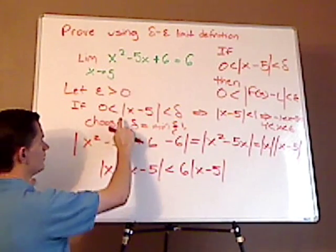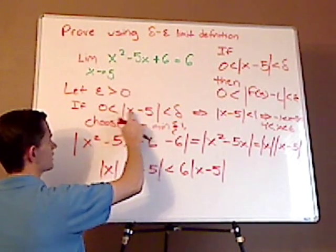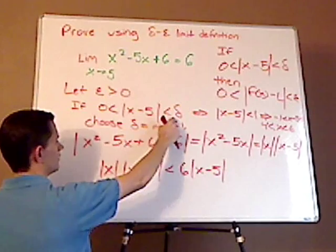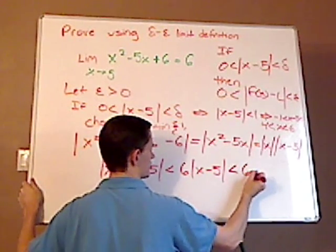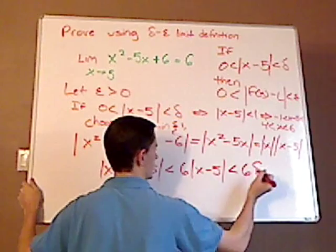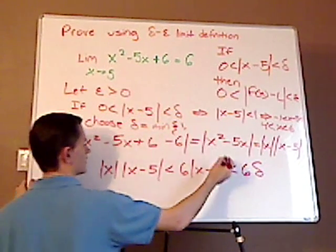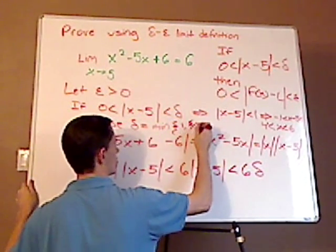So, then, if you multiply both sides by 6, you get less than 6 times delta. Well, if I make delta epsilon over 6,